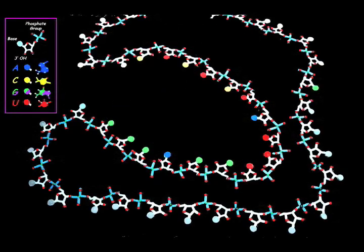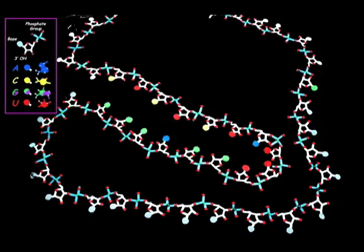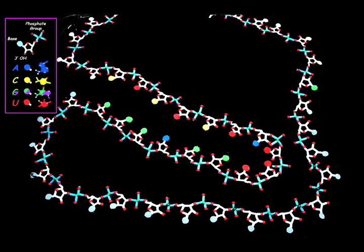This model shows a simplified view of a group 1 intron. One of the most important folding events is the creation of the internal guide sequence, or IGS. The IGS positions the 5' splice site into the active site near the reactive guanosine for the first step of the reaction, then aligns it with the 3' splice site for the second step.